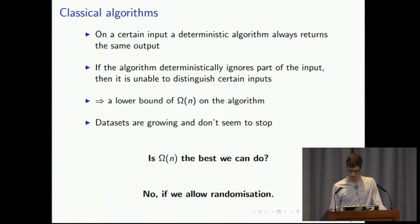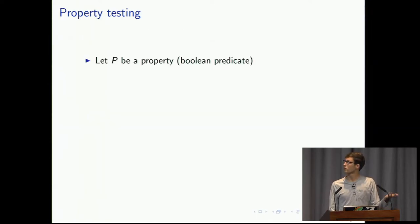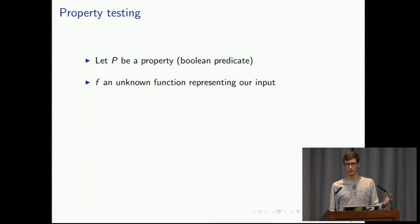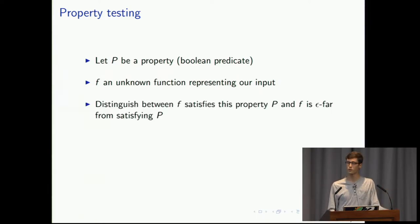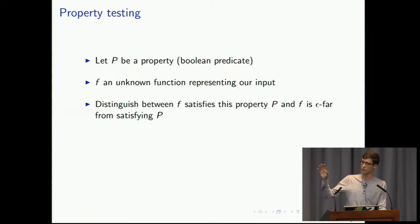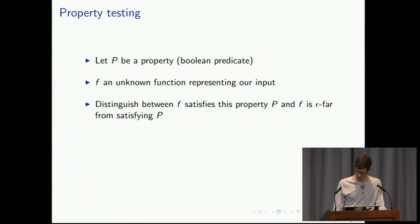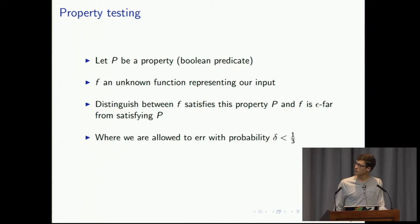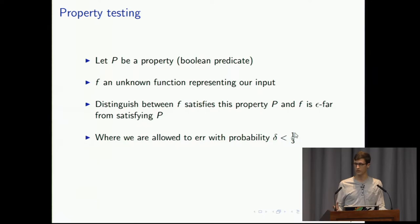Essentially, we're only going to look at a fraction of the input. A property tester is given a property — a Boolean predicate — and an unknown function that serves as the input. Imagine an array as a function: we give it an index and get the value at that index. We need to distinguish between the case that F satisfies property P, or that it is epsilon-far from satisfying P. We're also allowed to make a mistake; the error probability only has to be strictly smaller than one-third. We can run the property tester several times and take a majority vote to decrease the error probability as much as we want.